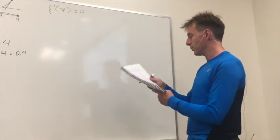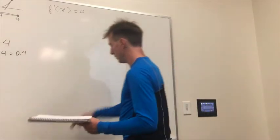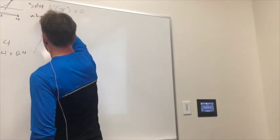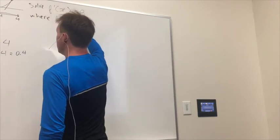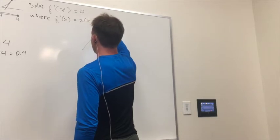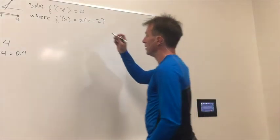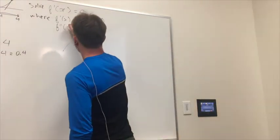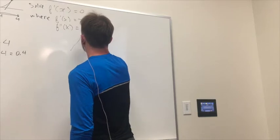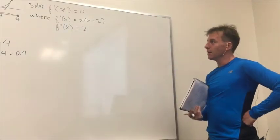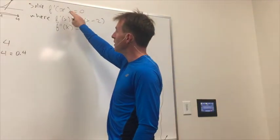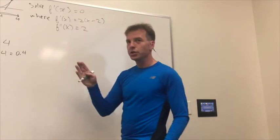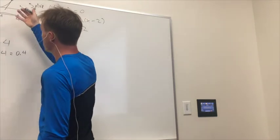Let me go over the simple example because the result will also be more general. We know f prime of x equals 2x minus 2. Now I'll introduce the second derivative — you take the derivative and differentiate it again, so the second derivative here is 2, a constant. The first derivative is the slope, measuring how fast the function is changing. The second derivative is the slope of the derivative, measuring how fast the slope is changing — essentially the curvature of the function.